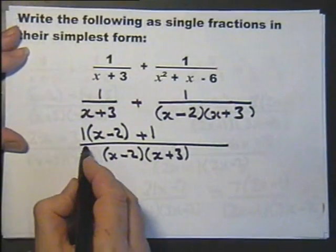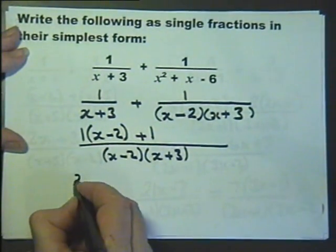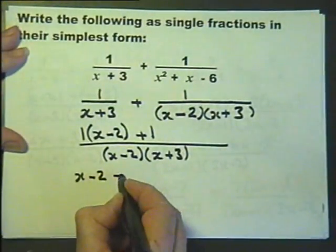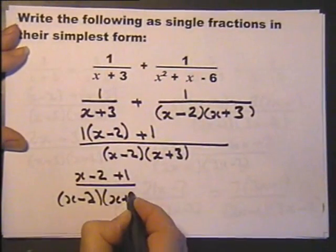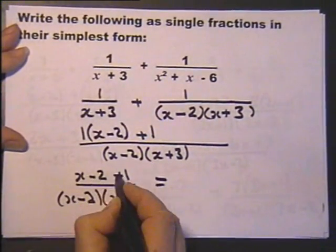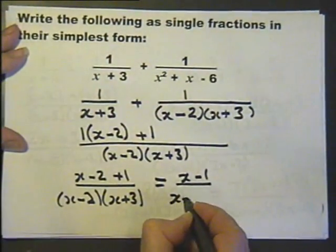So, on the top, I've got one times x minus two, and on the bottom, I've got this. So, on the top, I end up with x minus one, and on the bottom, I end up with this.